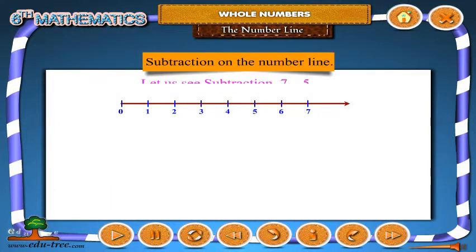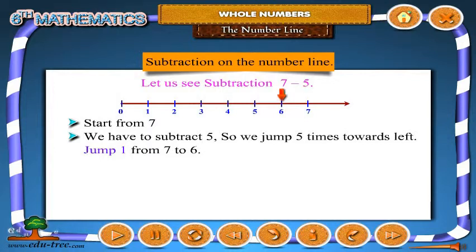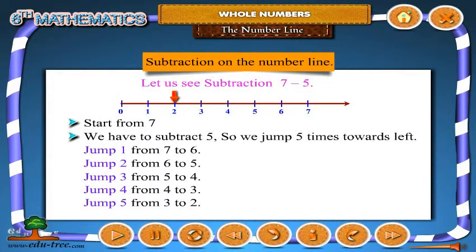Subtraction on the number line. Let us see subtraction: 7 minus 5. Start from 7. We have to subtract 5, so we jump 5 times towards left. Jump 1 from 7 to 6, jump 2 from 6 to 5, jump 3 from 5 to 4, jump 4 from 4 to 3, jump 5 from 3 to 2. So 7 minus 5 equals 2.